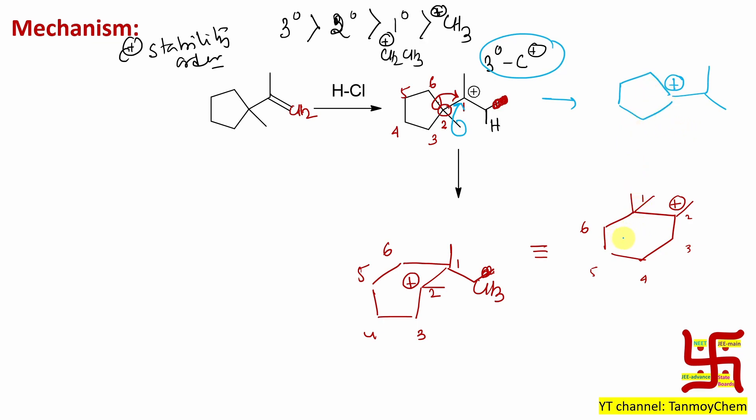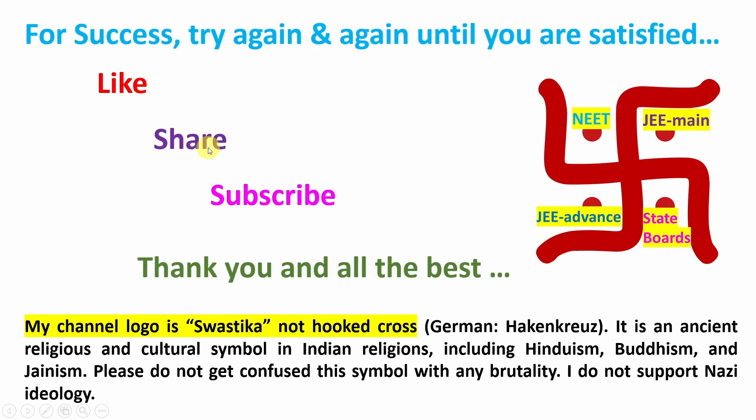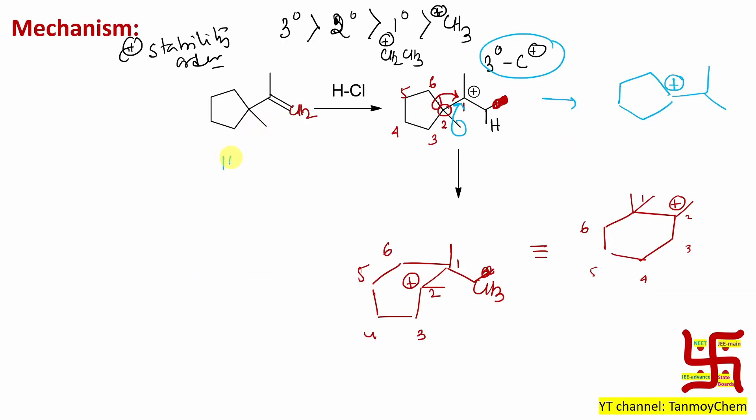Why? If you look at the five-member ring, the bond angle is nearly 107 degrees. But if you look at the six-member ring, the bond angle is exactly the sp3 hybridization bond angle, that is 109.5 degrees. So the ring strain is minimum.